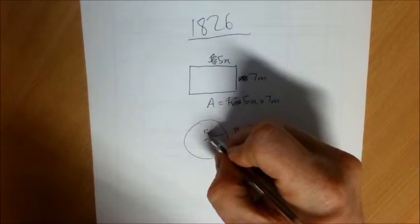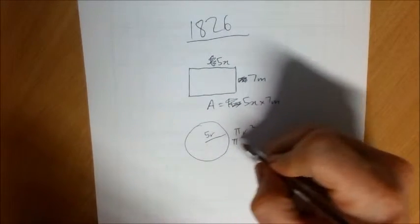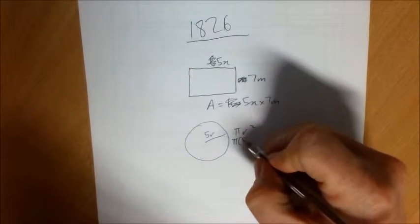If the radius is 5r instead of r, just take that formula and where you have r normally just write 5r.